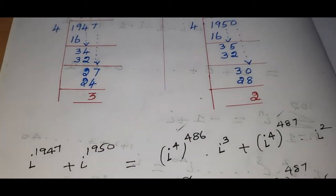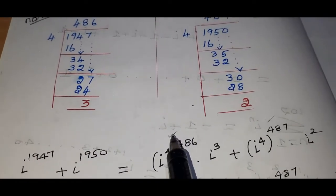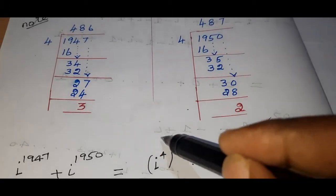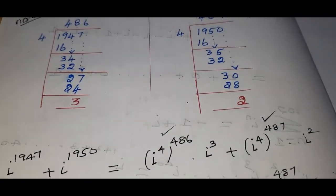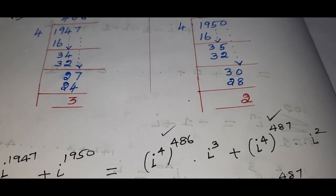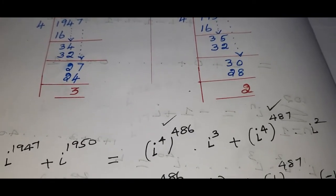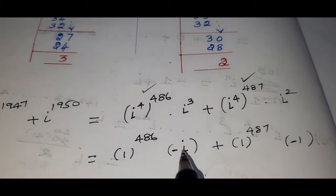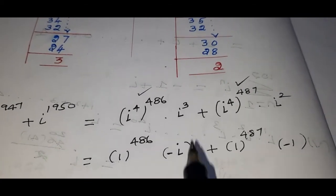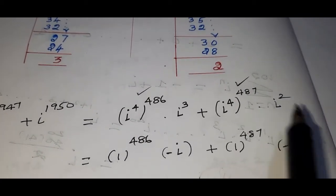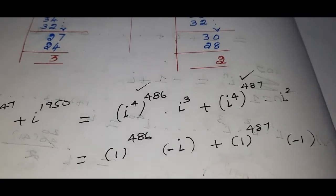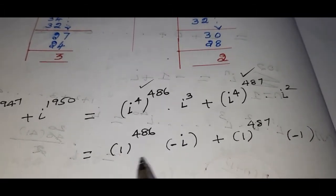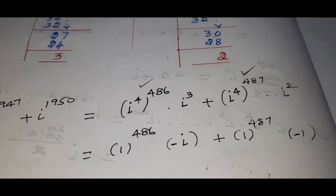Since i power 4 equals 1, one to any power is equal to 1. So the first term gives 1 into minus i, which is minus i. For the second term, 1 power 487 is 1.